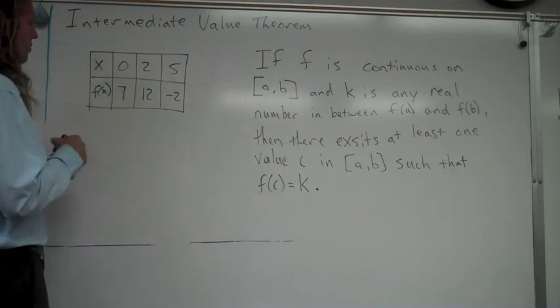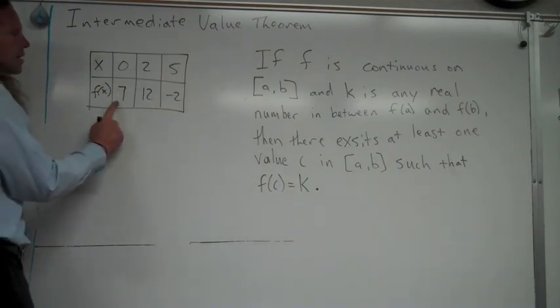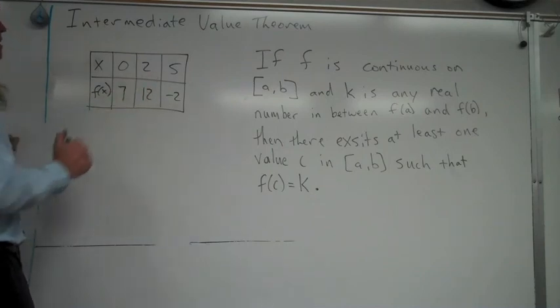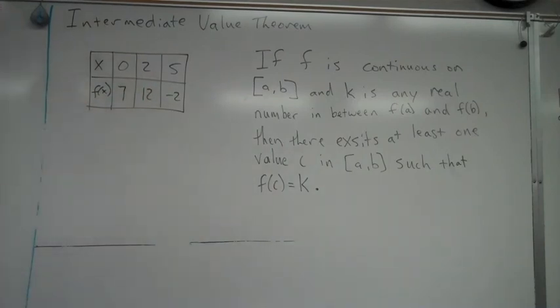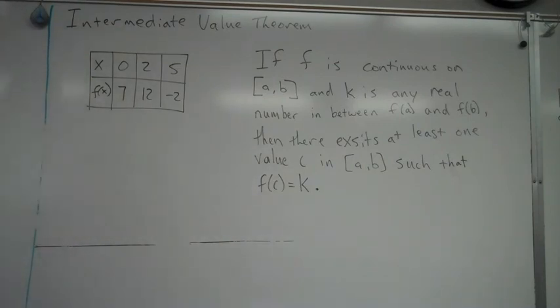And they could say do you know if this function is going to equal nine on this interval? I say oh I see at x equals zero the function is seven, at x equals two the function is twelve. So somewhere between zero and two, to get from seven to twelve, it's going to have to pass through nine if f is a continuous function. So that right there is just kind of a basic breakdown of intermediate value theorem.